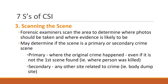The third S is scanning the scene. Forensic examiners scan the area to determine where photos should be taken and where evidence is likely to be. They may also determine whether the scene is primary or secondary. Primary is where the crime originally happened, even if it's not the first scene found. Secondary is any other site related to the crime — for example, a body dump site.